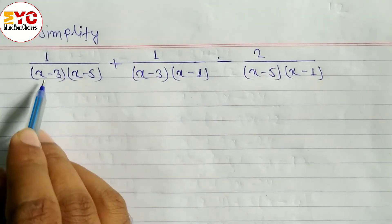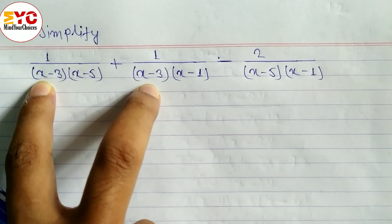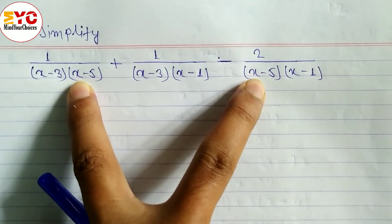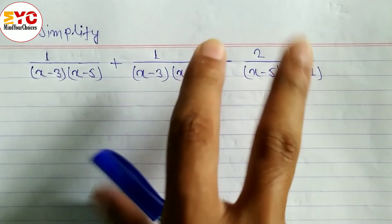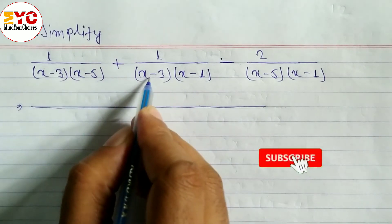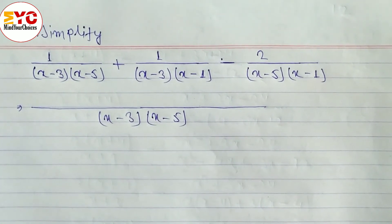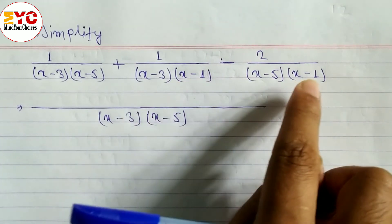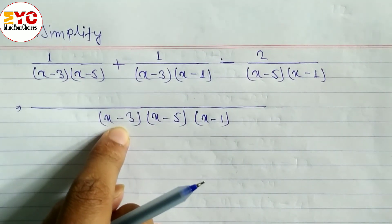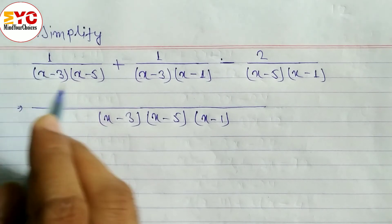The next question: 1 over (x minus 3)(x minus 5) plus 1 over (x minus 3)(x minus 1) minus 2 over (x minus 5)(x minus 1). You can see x minus 3 is common in the first two, x minus 5 appears twice, and x minus 1 appears twice — no need to rearrange. LCM is (x minus 3)(x minus 5)(x minus 1).